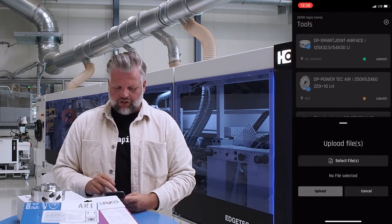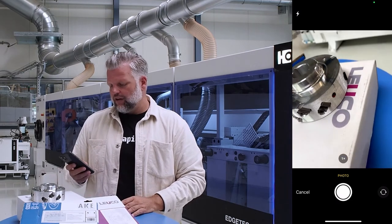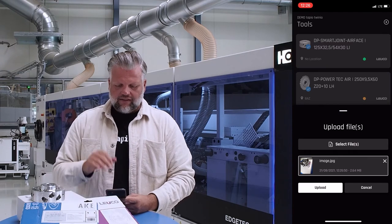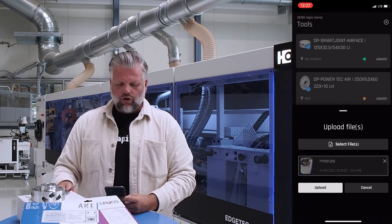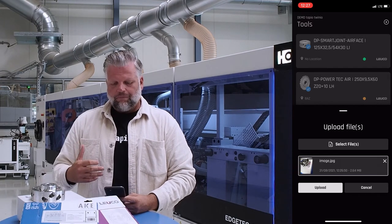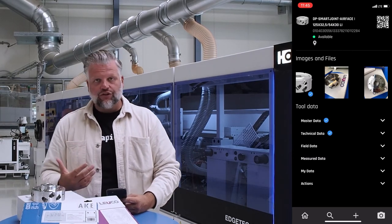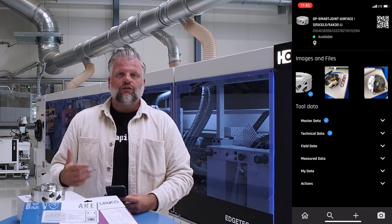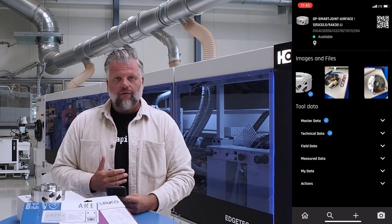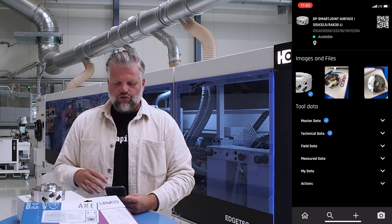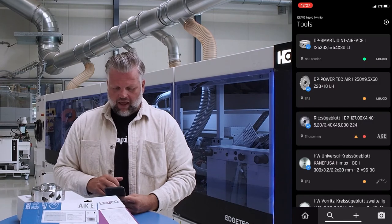Also under 'More,' you can attach files to the tool. Click 'Attach files,' select from your photo library or take a photo on the spot, then upload it. The picture gets stored on the tool's detail view. You can also upload PDF documents — sharpening protocols, technical drawings — as long as it's a JPEG, PNG, or PDF. This lets you enrich your tool entry with your own attachments.